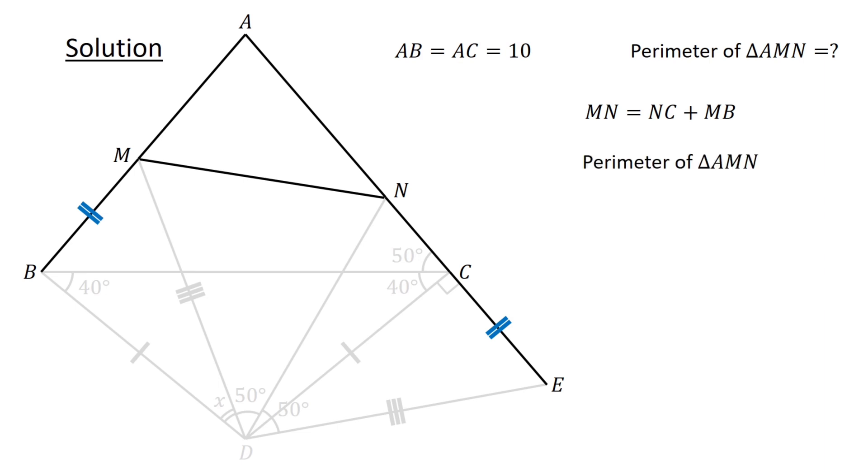The perimeter of triangle AMN is given by AM plus MN plus AN, which equals AM plus NC plus MB plus AN. Rewriting the expression as AM plus MB plus AN plus NC, we see that AM plus MB is AB, while AN plus NC is AC. Since AB and AC equals 10 units, the perimeter equals 10 plus 10.